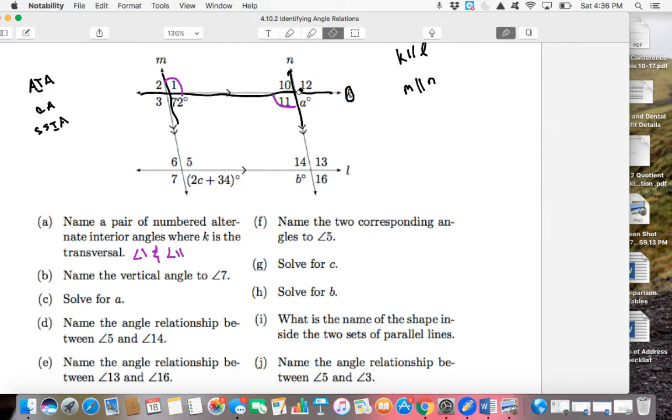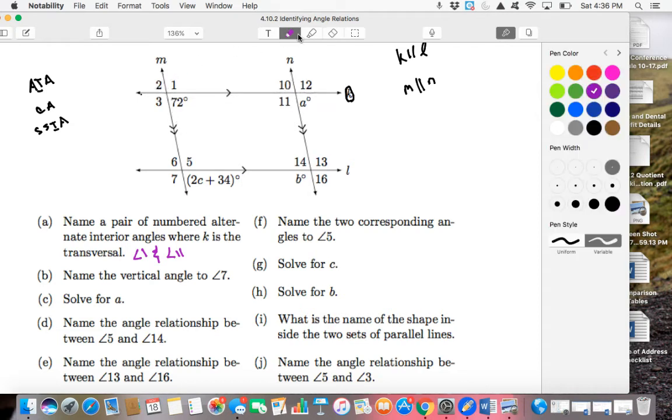That would be one case. Alright, let me erase this. Then, name the vertical angle to angle 7. Where are we looking at angle 7? Here's what I always recommend you guys do: go ahead and mark off where that angle 7 is just to kind of have it in our mind. We need a vertical angle to 7, so the angle across those four angles through 7, which would be angle 5.